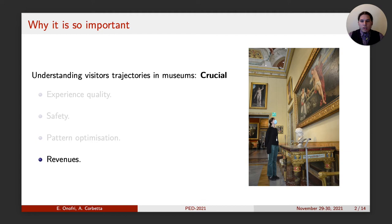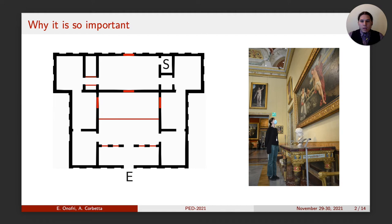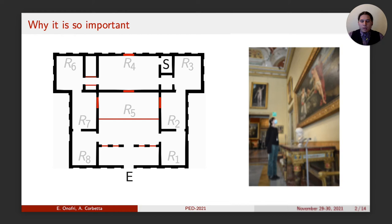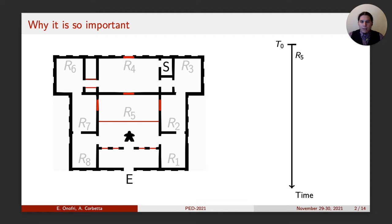Any kind of optimization starts from data and data in our case are visitor trajectories. In particular, let us consider a floor plan of a museum. Here we have the plan of Galleria Borghese in Rome, our use case as well as one of the most renowned museums of the world. Once we have assigned a number to each room, let us consider a visitor entering the museum and going from room 5 to room 8, then to room 7 and so on up to the stairs.